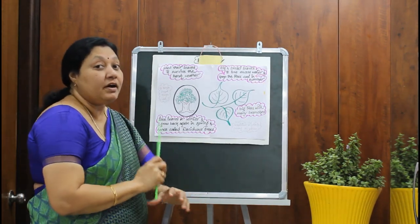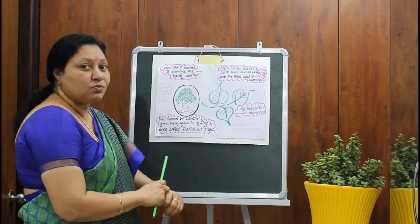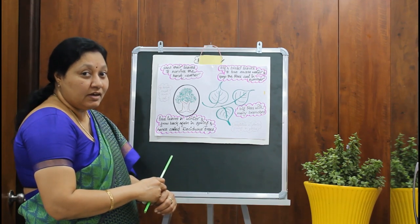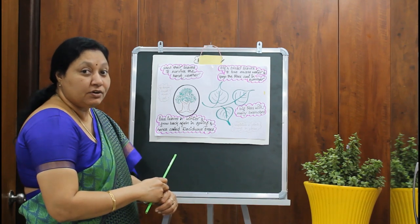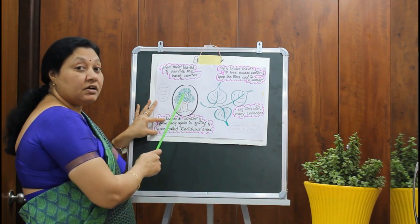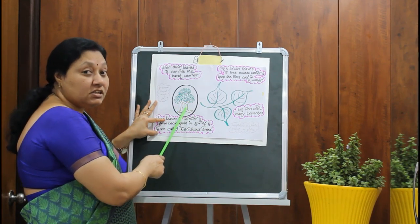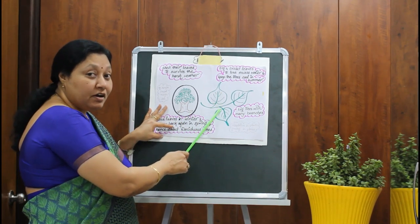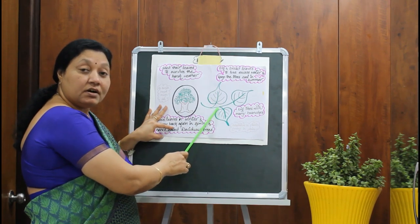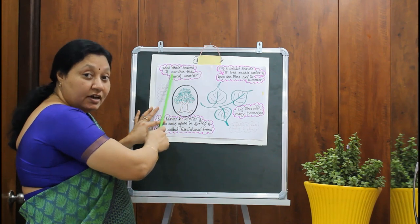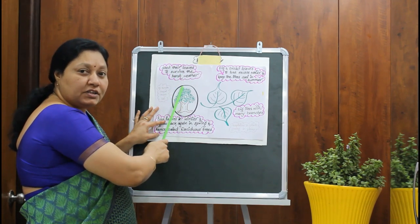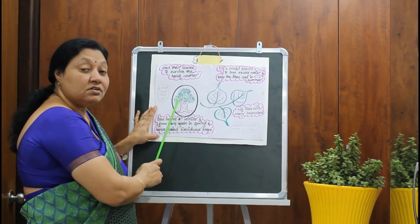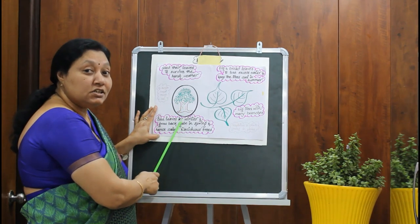Now let us learn the adaptations in plants growing on plains. Examples include mango, peepal, banyan, and sal. The trees that grow on plains are big in size with many branches. They have very big and broad leaves so that they lose the excess water. These trees shed their leaves to survive the harsh weather — they lose their leaves in winter and grow back again in spring. Hence, these trees are also called as deciduous trees.